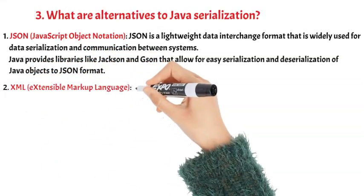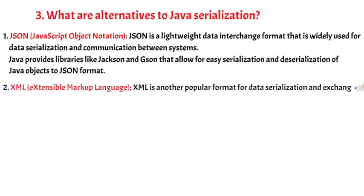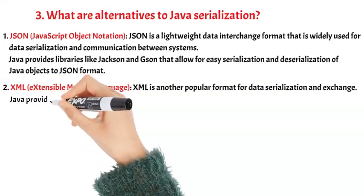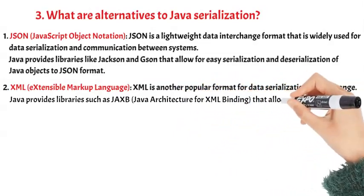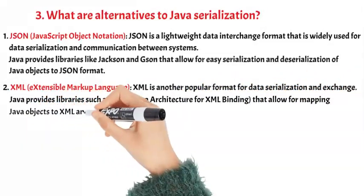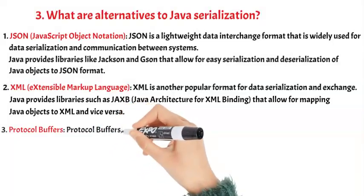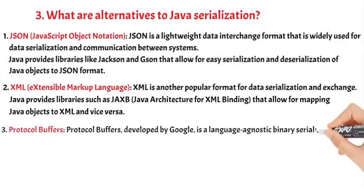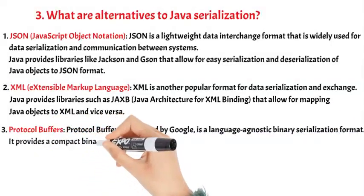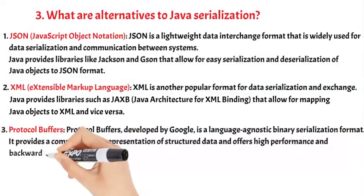XML (Extensible Markup Language) is another popular format for data serialization and exchange. Java provides libraries such as JAXB (Java Architecture for XML Binding) that allow for mapping Java objects to XML and vice versa. Protocol Buffers, developed by Google, is a language-agnostic binary serialization format. It provides a compact binary representation of structured data and offers high performance and backward compatibility.